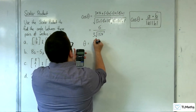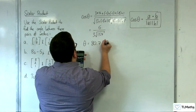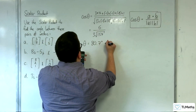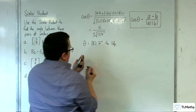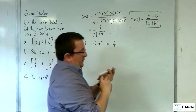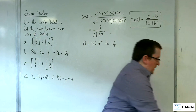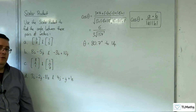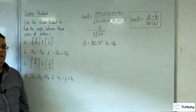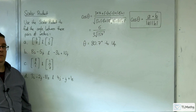We should get 80.7 degrees to one decimal place. That is how you can use the scalar product to find the angle between two vectors.